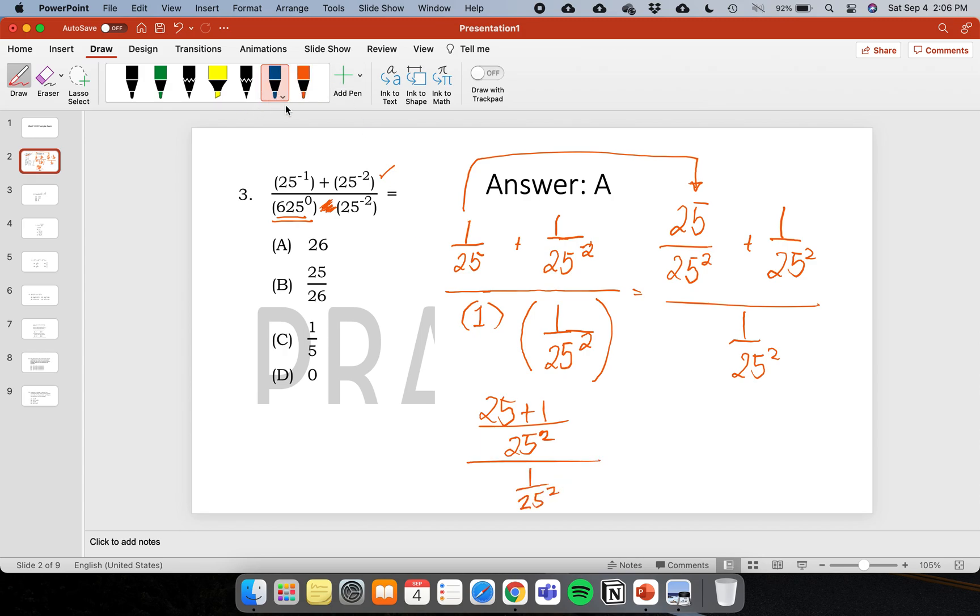Now this could cancel out because they're both in the denominator. The denominator of this fraction and the denominator of this fraction. So therefore, we are left with 26 divided by one, or simply 26. The answer is letter A.